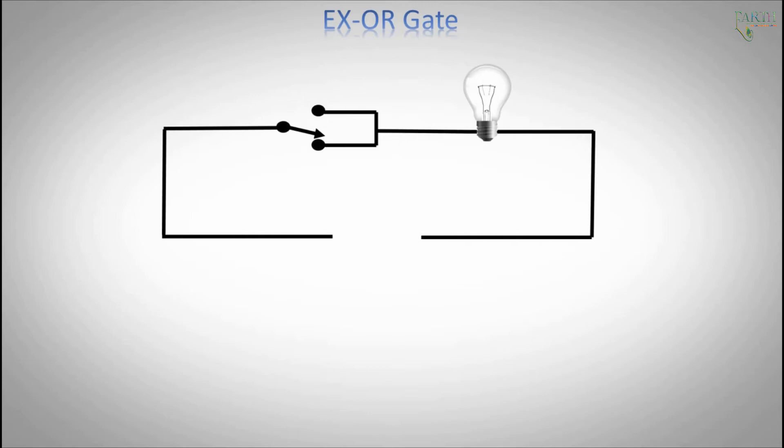XOR gate. XOR gate circuit diagram: input A, input B, output, power supply, positive, negative.